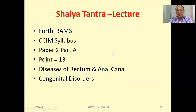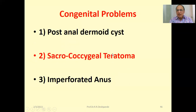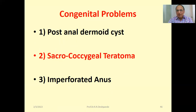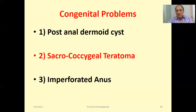In congenital problems, there are three important things: post anal dermoid cyst, sacrococcygeal teratoma, and imperforated anus. These are three problems which the child can have from birth itself. When problems are present from birth, that is called a congenital problem. You have to remember these three things — this question can be asked as a short answer question.